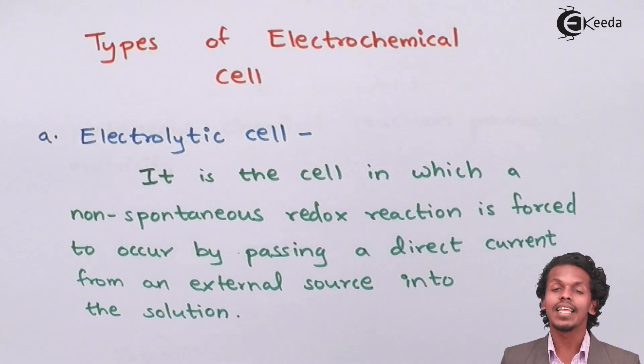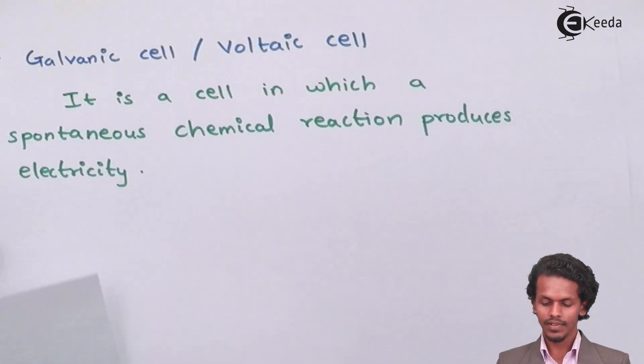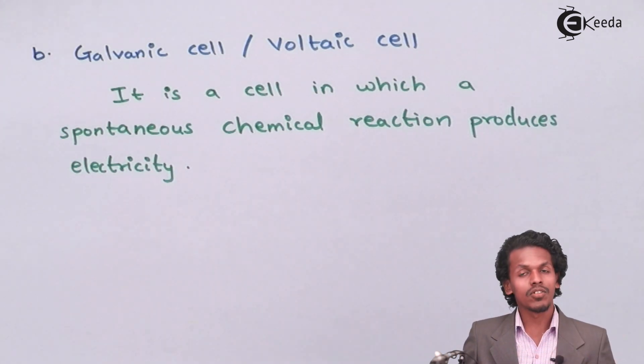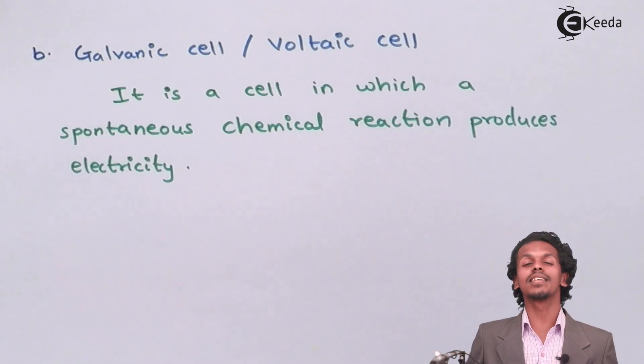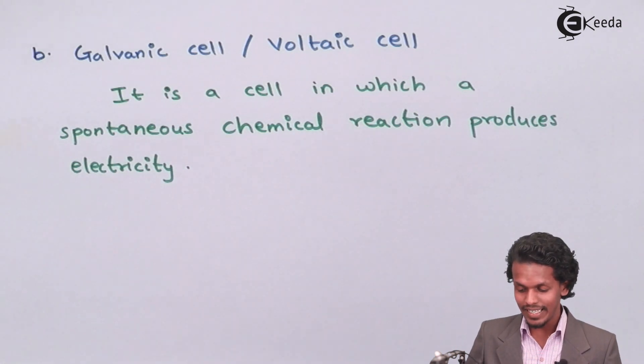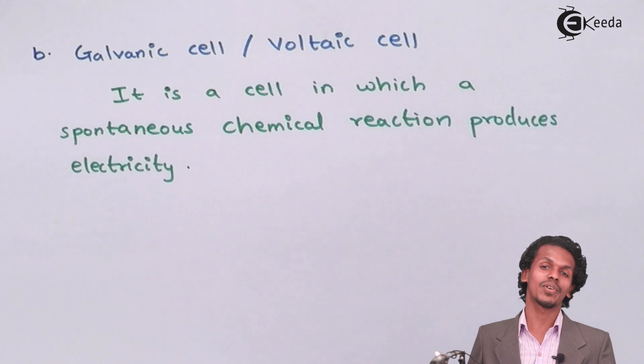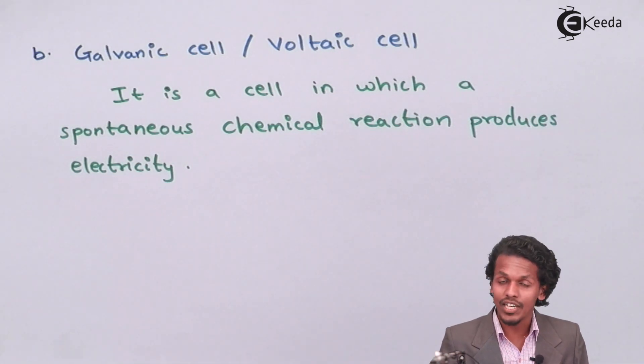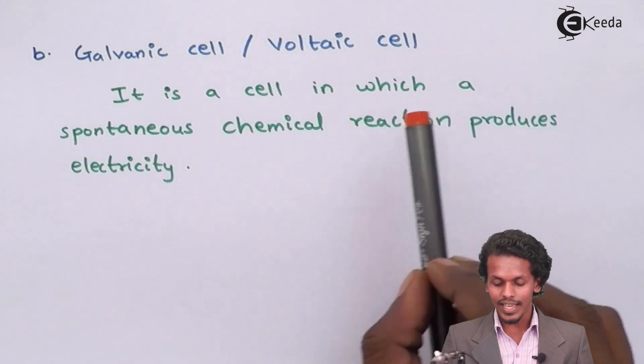So let's move towards the next kind of electrochemical cell which is galvanic cell, or it can also be said as voltaic cell. As the name suggests, galvanic means there is a production of electricity or again it is voltaic cell. Again there is a production of voltage or there could be a production of electric energy that we could get after a particular chemical reaction.